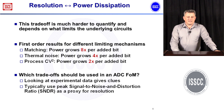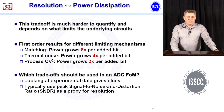The second trade-off between resolution and power dissipation is much more complicated, because it depends on what limits your underlying circuits. If your circuits are limited by matching, power grows by a factor of eight per added bit. If limited by thermal noise, power grows by a factor of four per added bit. If limited by process technology and CV² feature-size constraints, power grows by a factor of two.